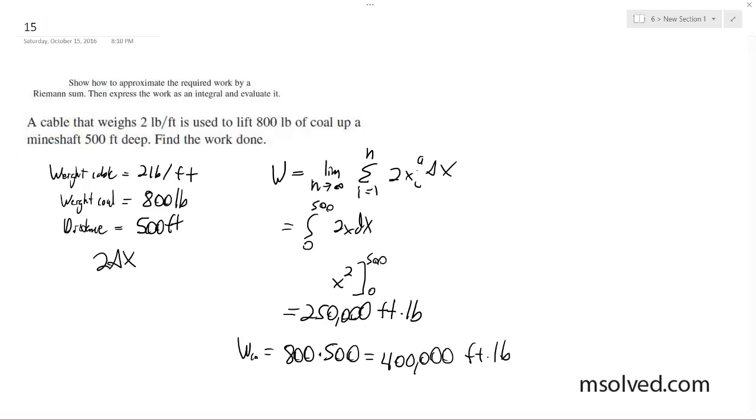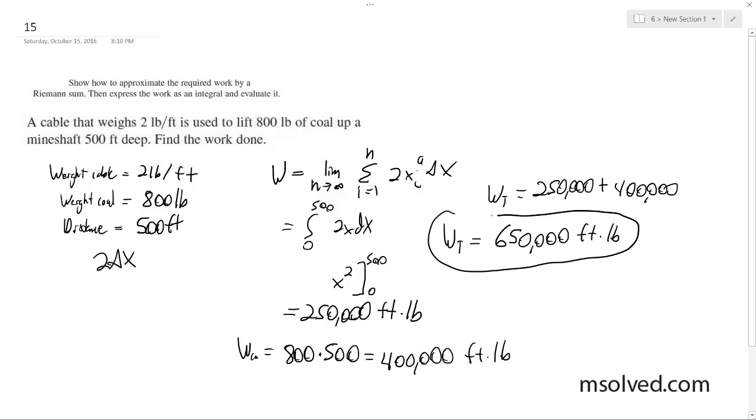That right there is the difference, and then we add these two together. So the total work done is 250,000 plus 400,000, and total work done equals 650,000 foot pounds. That's it.